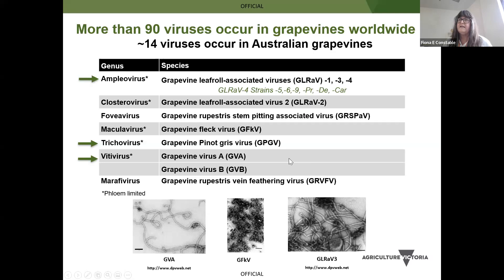I should mention leaf roll 2 is also really important. We don't find it quite so frequently, but it can also be associated with leaf roll and some other serious problems. Viruses are associated with a number of diseases: leaf roll disease, which many of you will be familiar with. You can see the disease associated with leaf roll 3 above, with the impact on bunches on some Cabernet Sauvignon, and symptoms that appear on a grafted Shiraz grapevine, probably in the Yarra Valley.